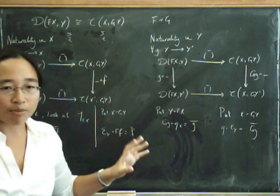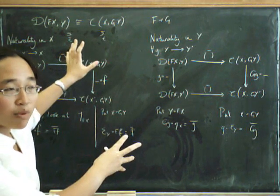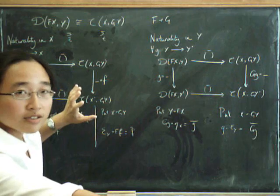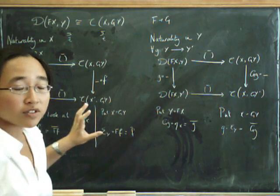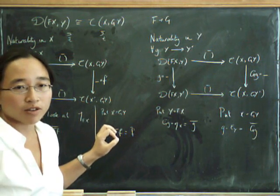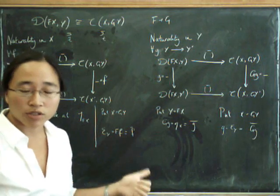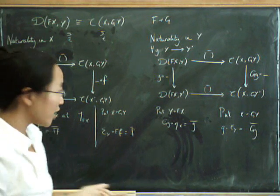So let's just recap. We're starting with this definition of adjunction, and we want to make it into the other definition of adjunction. So far, I've defined the components of eta and epsilon. So it remains to show that they are natural, and that they satisfy the triangle identities.